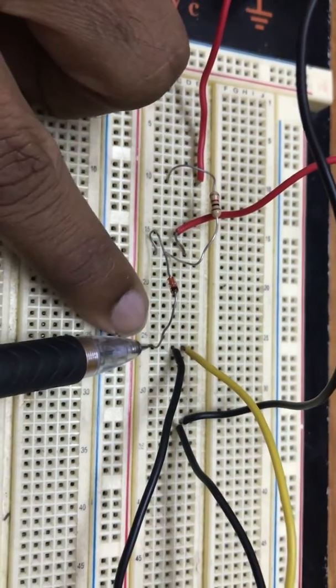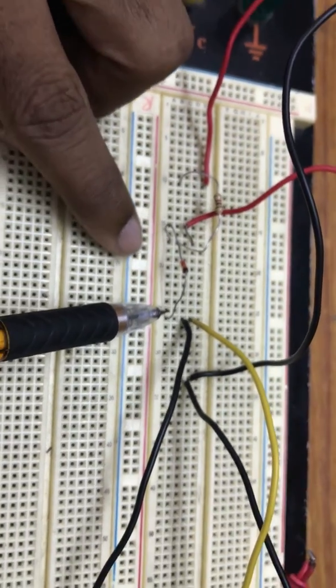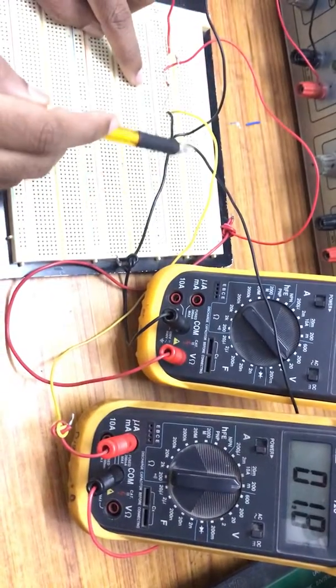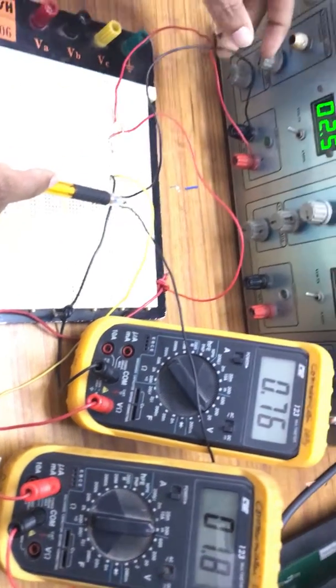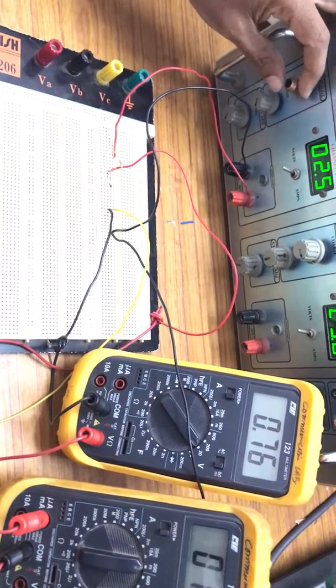The cathode terminal is connected to the positive of the ammeter. The negative of the voltmeter is connected to the same point, and the negative of the ammeter is connected to the negative of your DC supply. This is the connection for forward bias of your Zener diode.